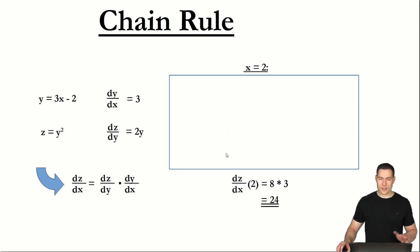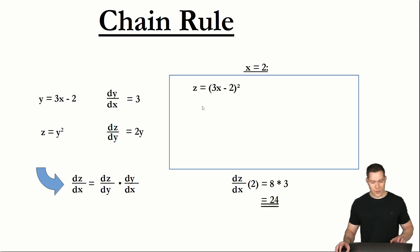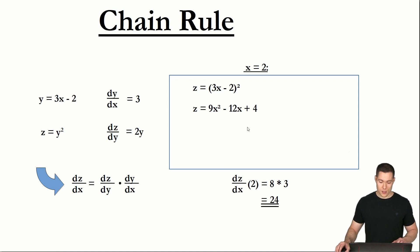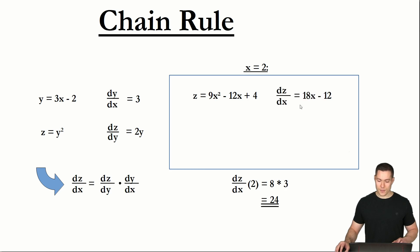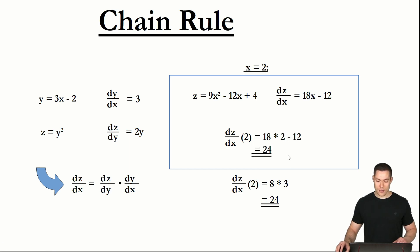Just to verify that the chain rule really works: if you substitute the formula for y into z, you get a single equation. Multiplying it out and taking the derivative of z with respect to x, then evaluating at x equals 2 gives 18 times 2 minus 12, which is again 24. So we get the same result as when we used the chain rule.